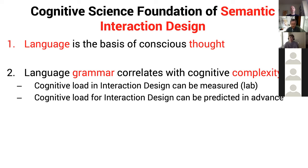Different computer languages introduce different cognitive load levels based on their grammar. Cognitive load can be measured in the usability lab — if you don't know how to do that, ask me in Q&A. It's not expensive and not too hard to do in a scalar way. What I'm telling you is new is that cognitive load can actually be predicted in advance before you even draw a single screen. Sounds kind of like magic, doesn't it?